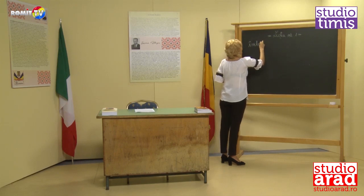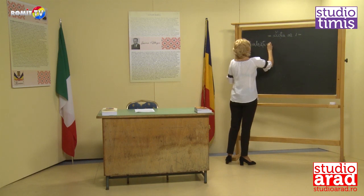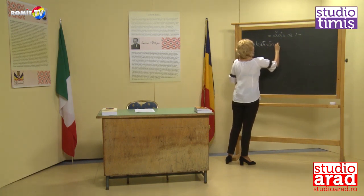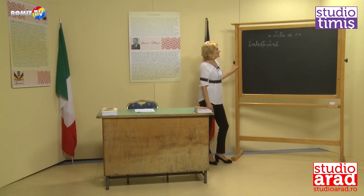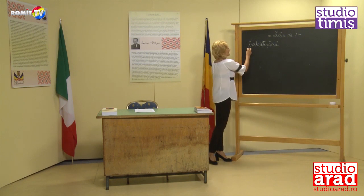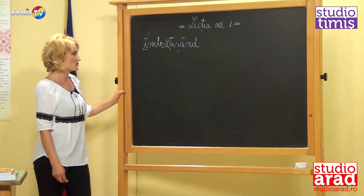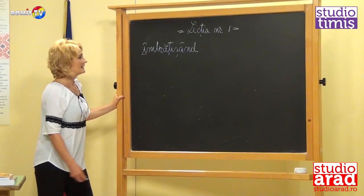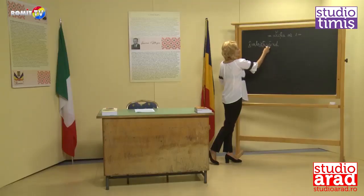Îmbrățișând. In this word we have all the specific characters of the Romanian language — those letters I was telling you about, which come from Latin letters with diacritical marks added. Which are they? We see: Î, Â, Ț, Ș, and another Î.